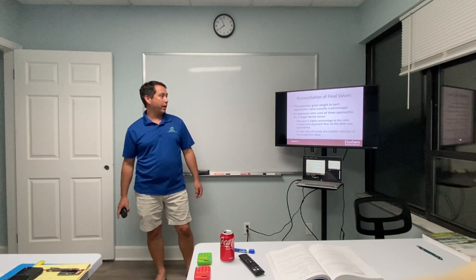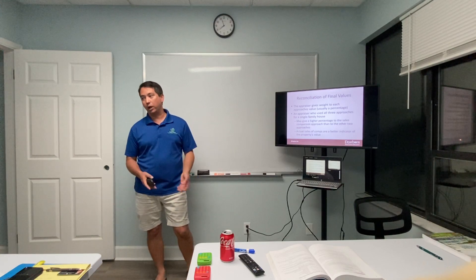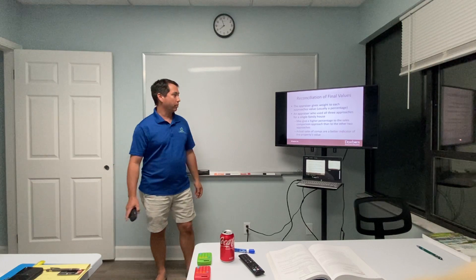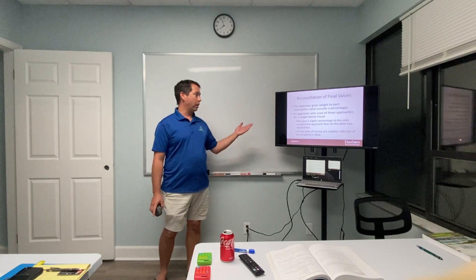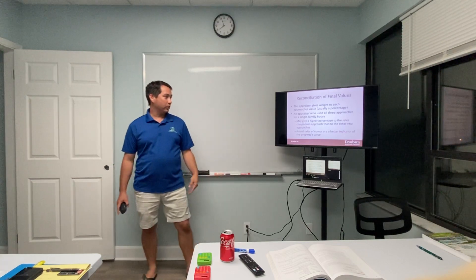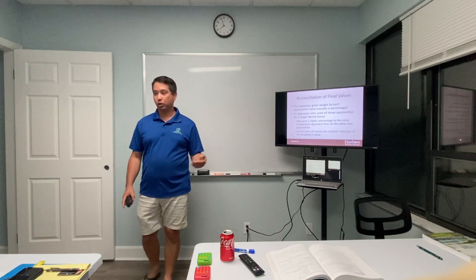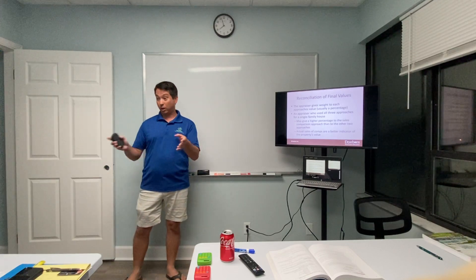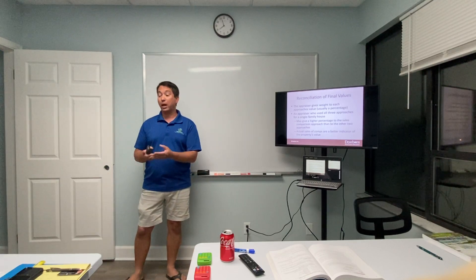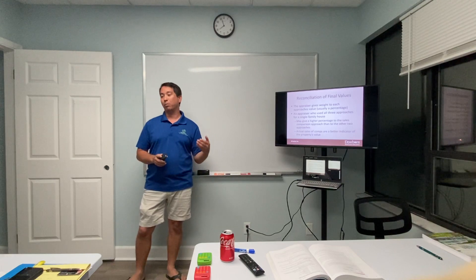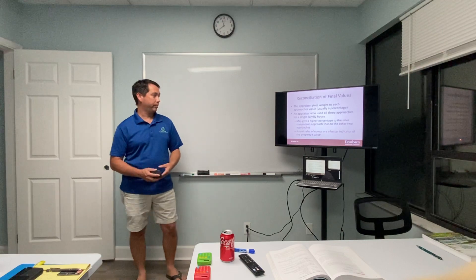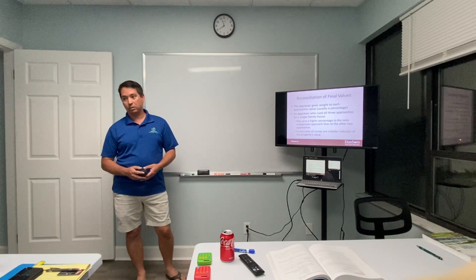When reconciling final values, you weight the approaches differently based on the property type and what it's most likely to be used for. You give a higher percentage to the sales comparison approach for most residential properties, and reconcile based on highest and best use. This is how you get from the three approaches to a single final value opinion.